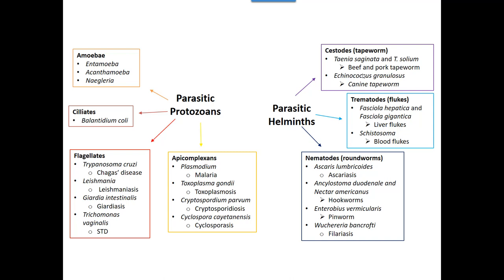We group parasites into protozoans and helminths, or worms. Most protozoans have mobility and we group them based on that. The first group is the amoeba, which ooze around in an amoeboid fashion. We also have the ciliates group, the flagellates group, and a group called the apicomplexans. The apicomplexans don't have mobility, but they have a complex of organelles that allows them to get from host to host. Although they don't physically move, they've still figured out a way to spread.